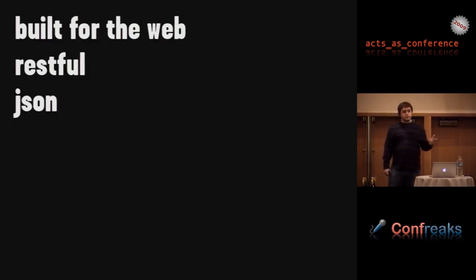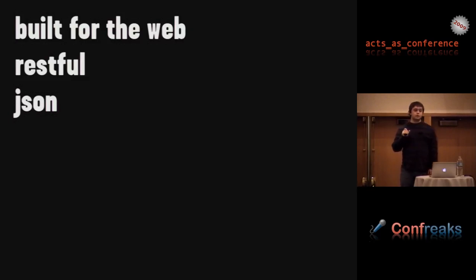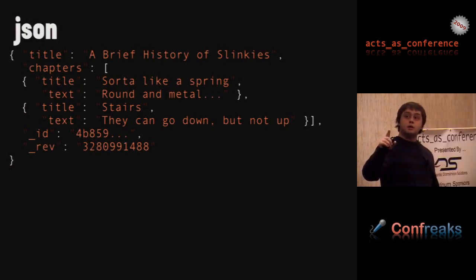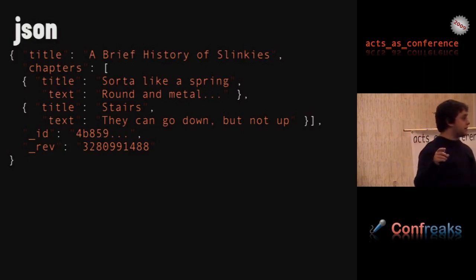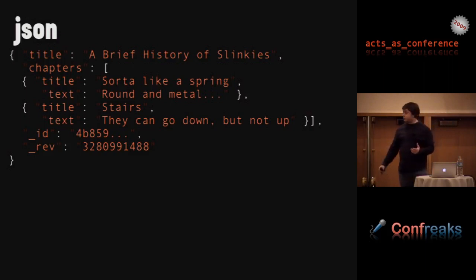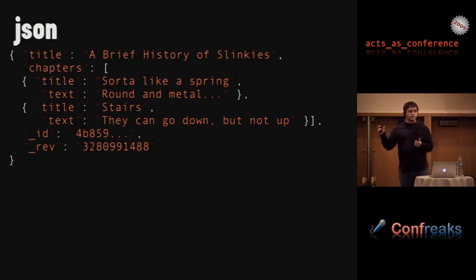What you're basically doing is storing and retrieving JSON documents, and this is actually the reason I like it the most — you can solve some problems you just can't do with a relational database. For example, if you're writing a book that has many chapters, in a relational database you'd have a separate table for chapters. But with a document database, you can have it all in the same place where it makes sense — the chapters don't really make sense to exist by themselves, but they make sense in the context of the book.